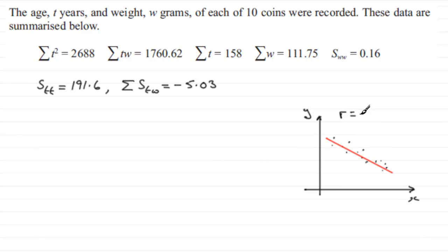Anyway, how do we calculate R? In your formula books, you most probably got R equals SXY, all divided by the square root of SXX multiplied by SYY. Now we have to change this, because obviously we haven't got these variables Y and X.